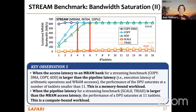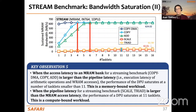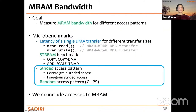Important observation: if a workload saturates with less than 11 tasklets, it is likely memory-bound on this architecture, meaning MRAM access latency is hiding pipeline instruction execution. If throughput saturates at 11 tasklets, the pipeline latency hides MRAM access latency — we call this a compute-bound workload on this architecture.